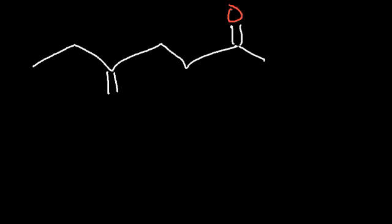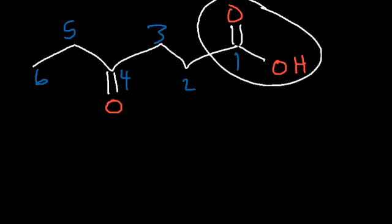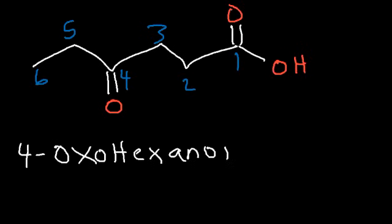Let's move on to the next example. We need to start counting from the carboxylic acid. Which group has higher priority — the ketone or the carboxylic acid? Groups at the end of a chain usually have more priority than those in the middle, so the carboxylic acid will be associated with the parent name. To name a ketone as a substituent, we use oxo. So this is called 4-oxohexanoic acid, since we have a 6-carbon chain. Ketones and aldehydes use the name oxo whenever they are substituents rather than the parent chain.